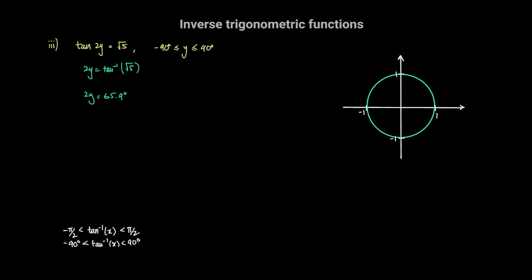If we look at this angle on the unit circle, 65.9 degrees is in the first quadrant, starting from the positive x-axis going counterclockwise. Let's say this point on the unit circle has coordinates x1, y1. The tan of any angle is the ratio of the y and x coordinates, so the tan of 65.9 is y1 over x1. Now, we shouldn't divide by 2 directly, because there can be multiple values of y for which the tan of 2y equals the square root of 5. Since y ranges from negative 90 to 90 degrees, 2y ranges from negative 180 degrees to 180 degrees.